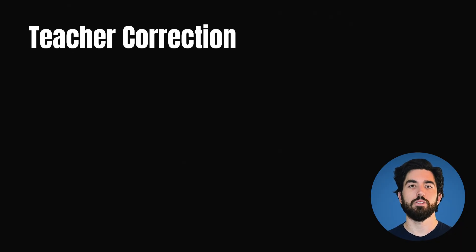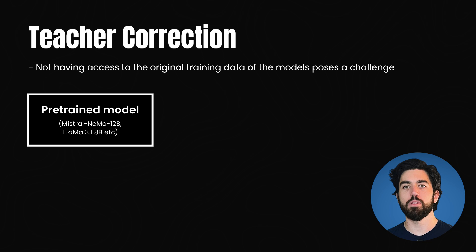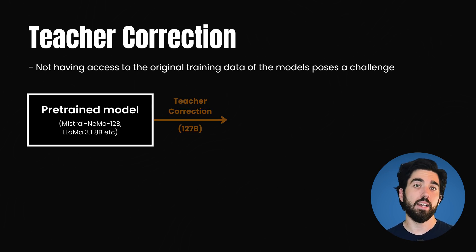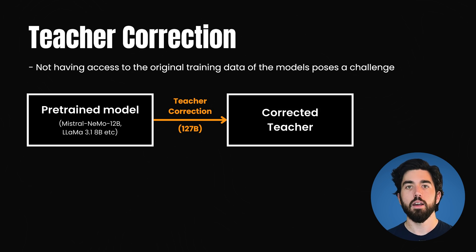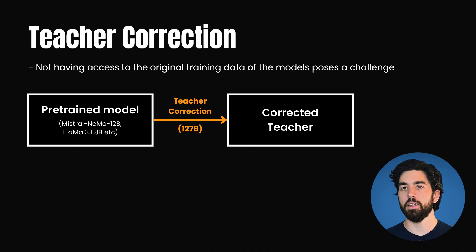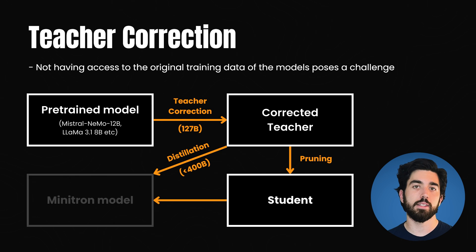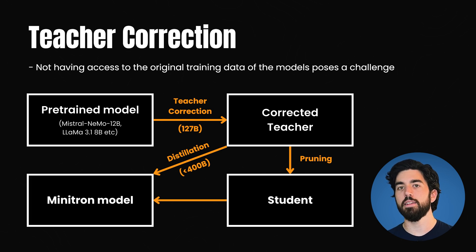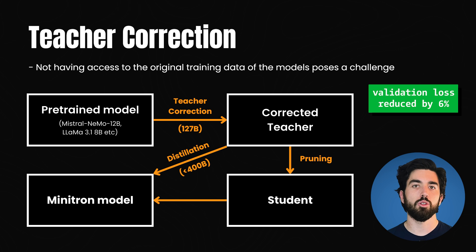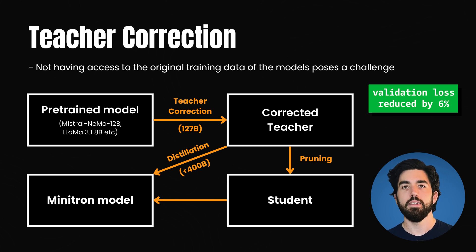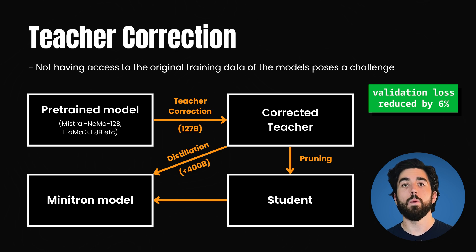First, teacher correction. One of the challenges was that they didn't have access to the original training data of these models, so they had to do teacher correction. This means they took the large uncompressed model — the teacher — and fine-tuned it on their own dataset. This step is crucial because it ensures that when they later distill the model, the teacher is up to date with the data it's working with. By doing this, they managed to reduce the validation loss by over 6%. They could do this teacher correction while also distilling the model without disrupting the pruning process.